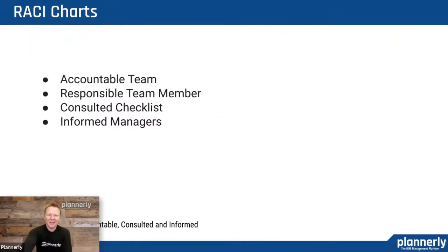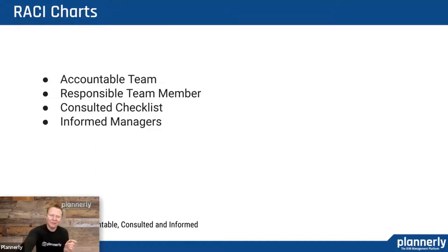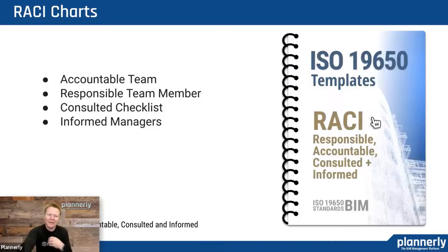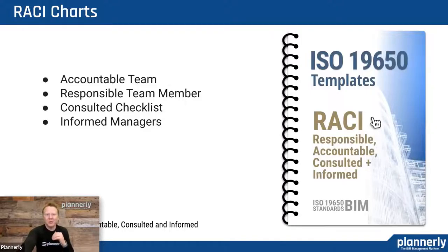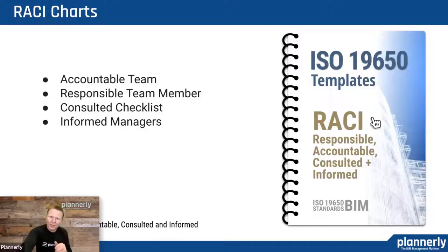And then RACI charts — lots of people pronounce these differently. How do you assign accountability to a team, responsibility to a team member, and then have consulted people at the right times and people that are informed about the ongoing results? So it really is: responsible, accountable, consulted, informed. We really understand it much more as the team being accountable and being able to assign somebody specifically as a responsible person. Inside of the RACI charts, you see all of those ISO 19650 clauses, and then a grid to assign who is responsible, who is accountable, who needs to be consulted, and who needs to be informed.